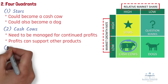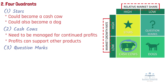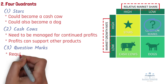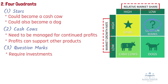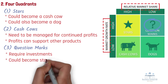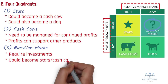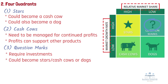Profits from cash cows can also be used to support other products. Number 3: Question Marks. Question marks are low market share and high-growth products. Most businesses start as question marks. These require huge investments to capture or protect market share. Question marks have the potential to become stars and eventually cash cows, but can also become dogs.